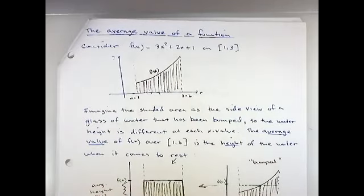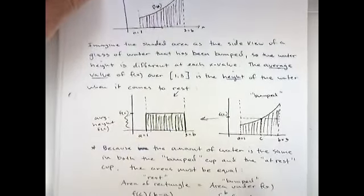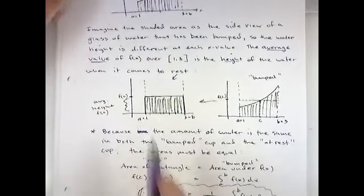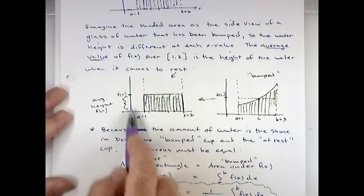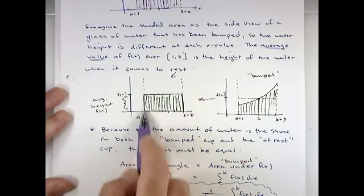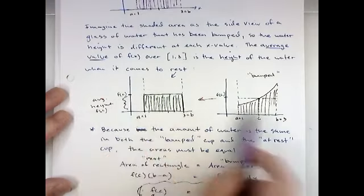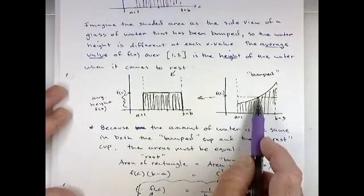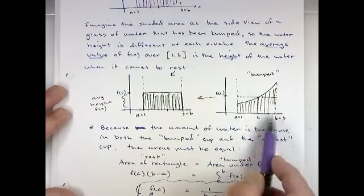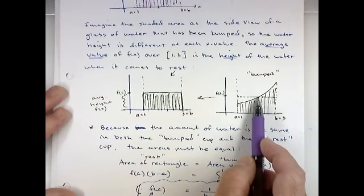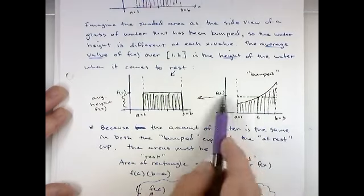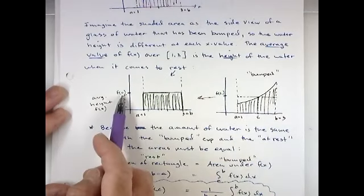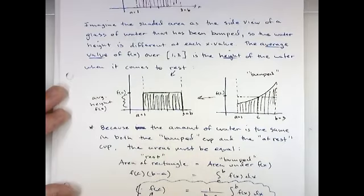But let's go back to the water idea. When the water comes to rest, it's going to resemble a rectangle if you look at a side view. The average height would be this. And we're gonna call this F of C. C representing there would be some X value between your A and B value where the height, in other words, F of C would be your average height. That would be the height when the water comes to rest. So we're gonna denote that as F of C is your average height.